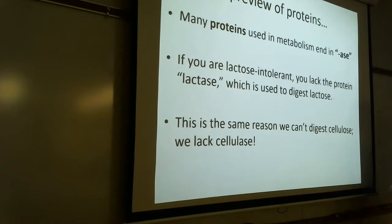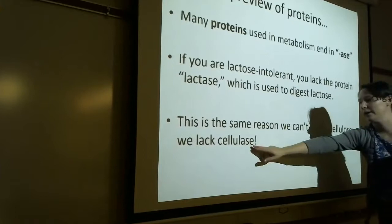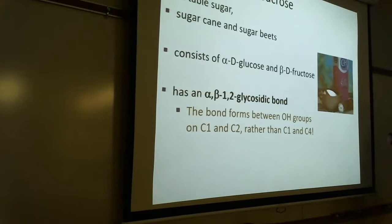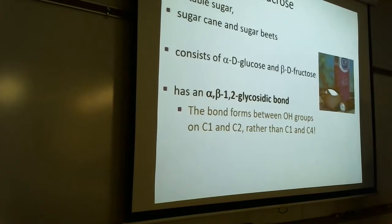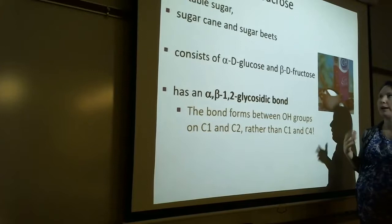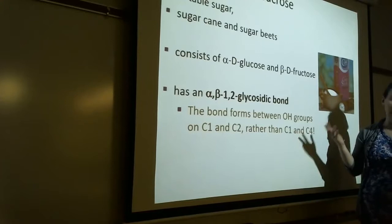And we'll talk about cellulose here in a few minutes. We can't digest it because we don't have this enzyme, cellulase. Sucrose is table sugar. That's why the reason we picked it as one of the ones you need to know. It's made out of glucose and fructose. So again, if I said draw the products of the hydrolysis of sucrose in the alpha configuration, you would need to do that.